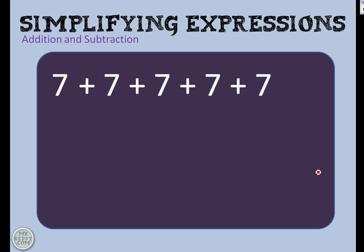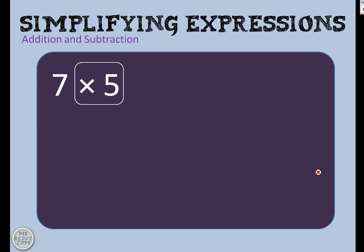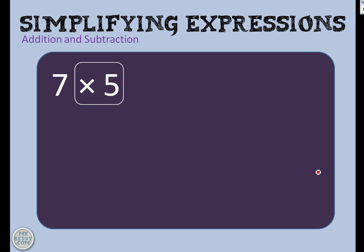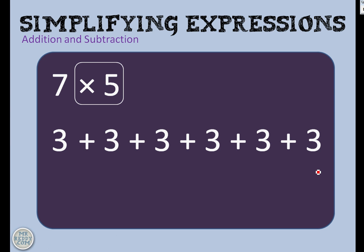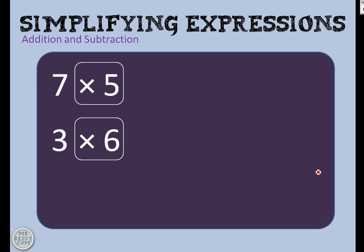7 plus 7 plus 7 plus 7 plus 7 plus 7 — that can be shortened to 7 times 5. With repeated addition, we can use multiplication. So 7 times 5 would have been shorter. Here's another example: 3 plus 3 plus 3 plus 3 plus 3 plus 3 plus 3 plus 3. All of those plus 3s can be shortened down to multiplication, so we get 3 times 6.